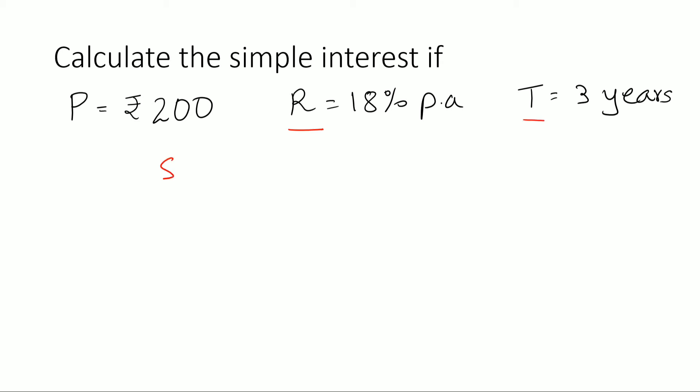So using the formula SI equals to P times R times T divided by 100. Let's substitute 200 times 18 times 3 divided by 100. The zeros get cancelled out. So this is 2 times 18 times 3.